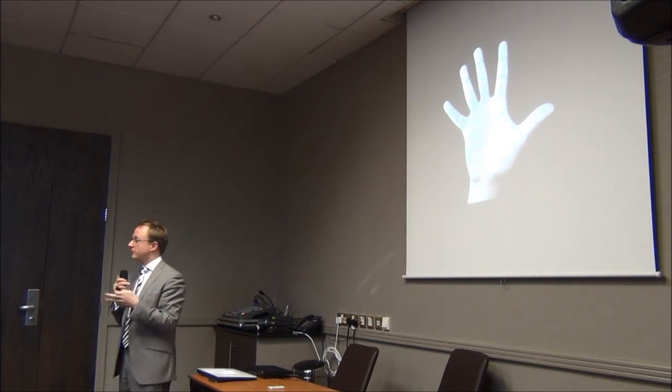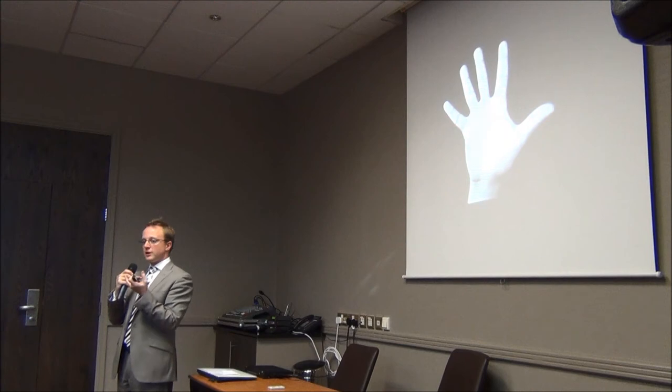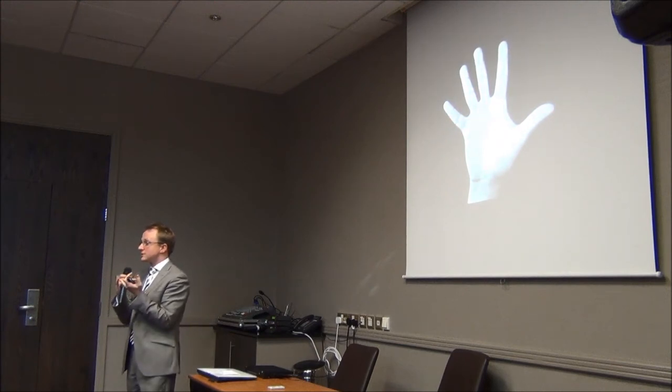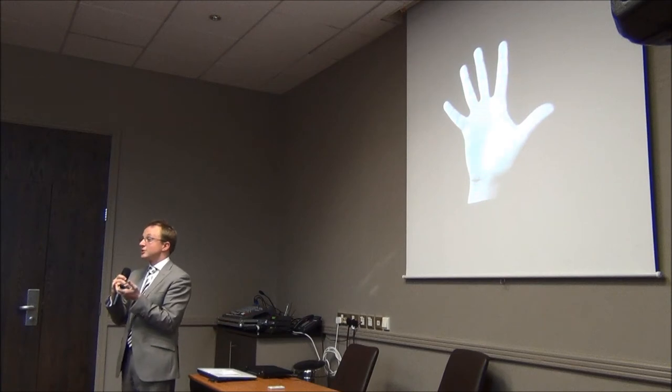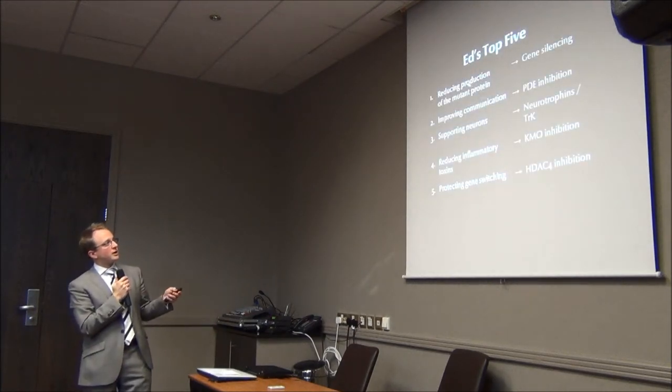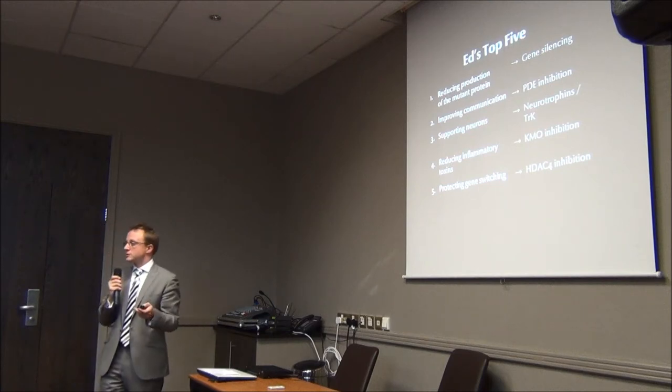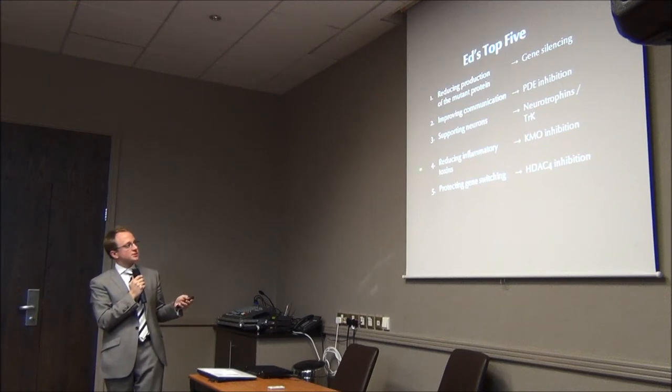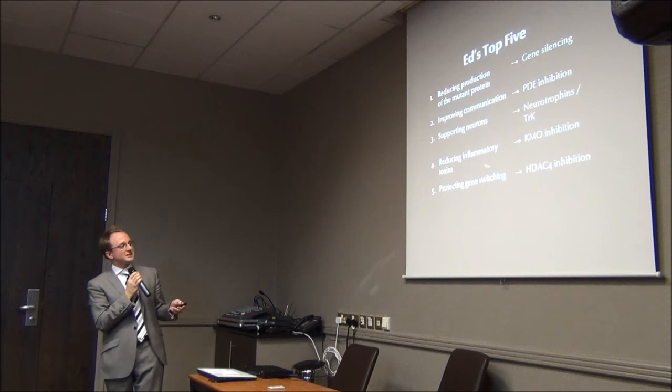So scientists then kind of break down that problem into possible solutions. And I'm going to tell you about the top five possible solutions that are being worked on. And I've organized them into, well I've chosen them on the basis that they are most exciting, and also most likely to lead to human trials soon. These are my top five. Reducing production of the mutant protein. Improving communication between brain cells. Supporting neurons, helping them to survive. Reducing inflammatory toxins. And protecting the gene switching systems of our cells.